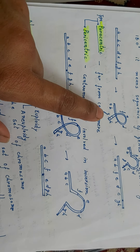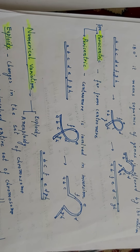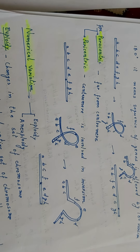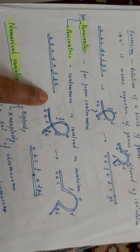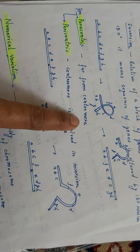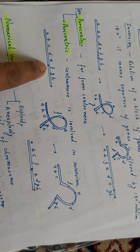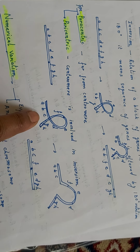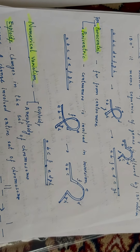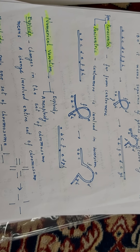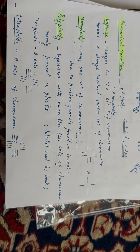Paracentric means far from centromere — centromere does not take part in it, and this type of inversion is called paracentric inversion. If the centromere takes part in inversion, it is called pericentric inversion. In pericentric inversion, the centromere is present between E and F, and the sequence C, D, E, F changes to A, B, C, D then centromere, then E, then D, then G, then H. This is structural changes in chromosomes.